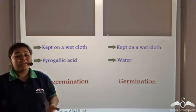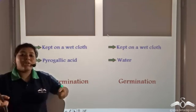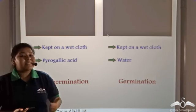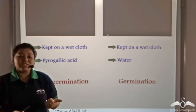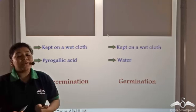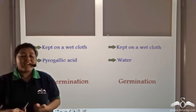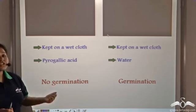Because pyrogallic acid was absorbing all the oxygen present inside the conical flask, the seed did not get any oxygen. So in turn, the embryo did not get any oxygen for germination and hence there was no germination.